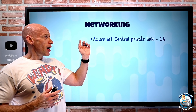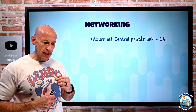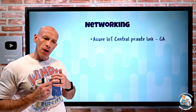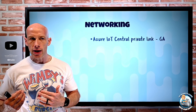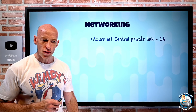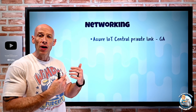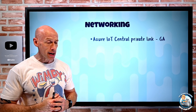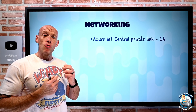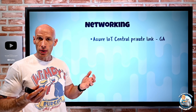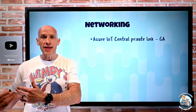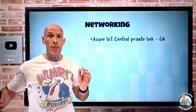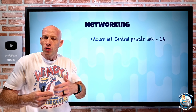On the networking side, Azure IoT Central now has private link support. IoT Central is all about providing a service through which IoT devices can send their telemetry and through which you can do device management. Now you can use private endpoints into your virtual network, so those IoT devices, instead of talking to a public endpoint on the internet, can talk to a private endpoint — just an IP address within your virtual network. If you have other networks, such as on-premises connected via site-to-site VPN or ExpressRoute private peering, they can use that as well.